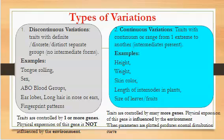Continuous variations — these are traits or characteristics with intermediaries from one extreme to the other. From one extreme to another, you can have a wide range of parameters within these traits.